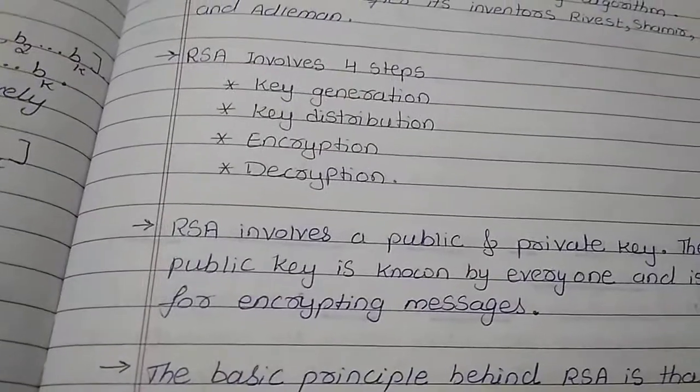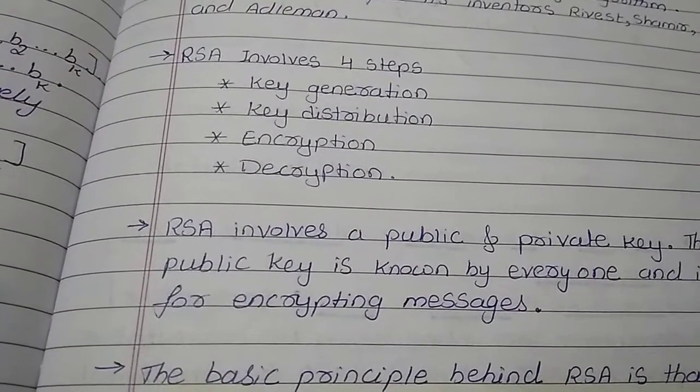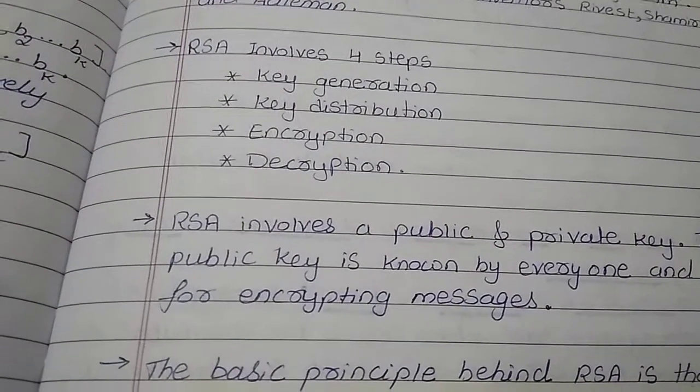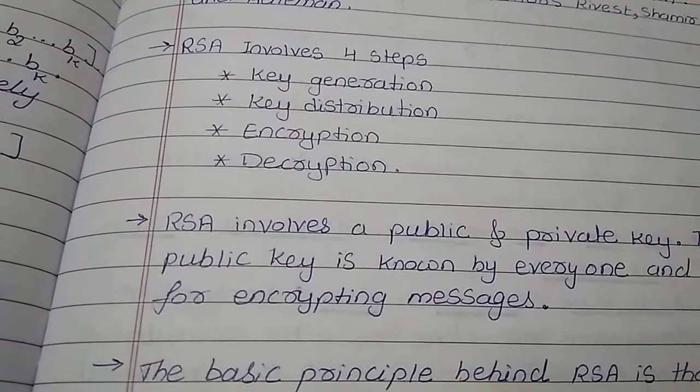The RSA cryptosystem involves four steps: key generation, key distribution, encryption and decryption.